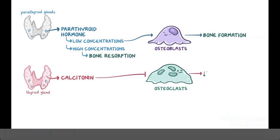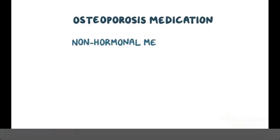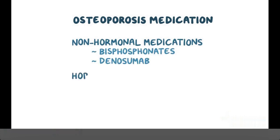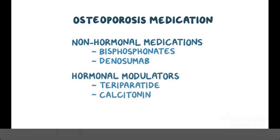Moving on to pharmacology, osteoporosis medications are subdivided into two main groups: non-hormonal medications, which include bisphosphonates and denosumab, and hormonal modulators, which include teriparatide, calcitonin, and raloxifene.